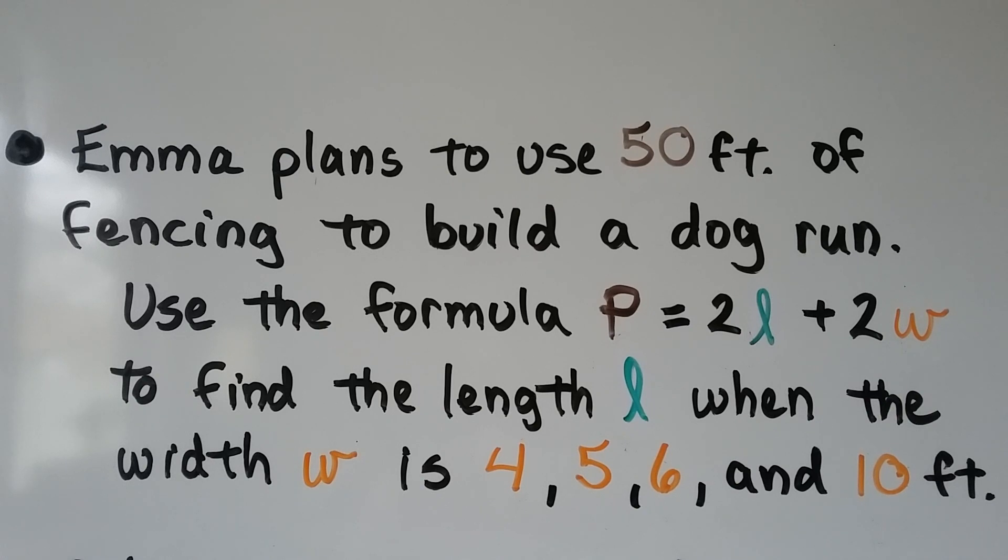Emma plans to use 50 feet of fencing to build a dog run. We can use the formula for perimeter p equals 2l plus 2w to find the length l when the width w is 4, 5, 6, and 10 feet.